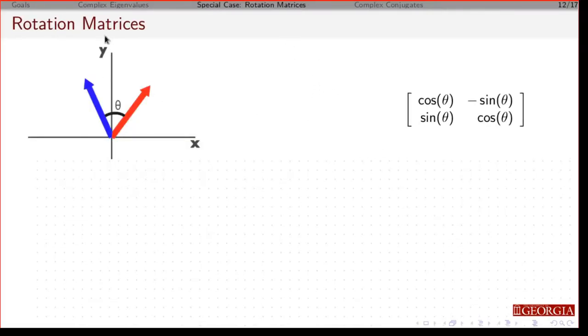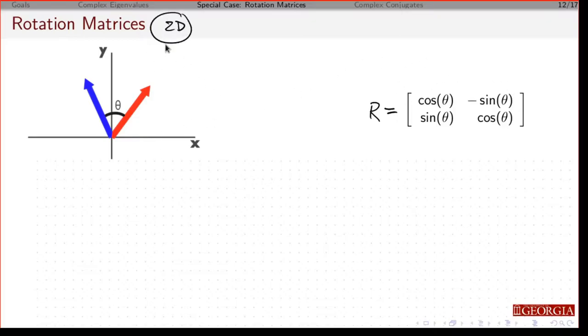I'm going to look at a special case here, and this special case is the idea of a rotation matrix. For this rotation matrix — this is in 2D, but it extends nicely to other dimensions, higher dimensions.